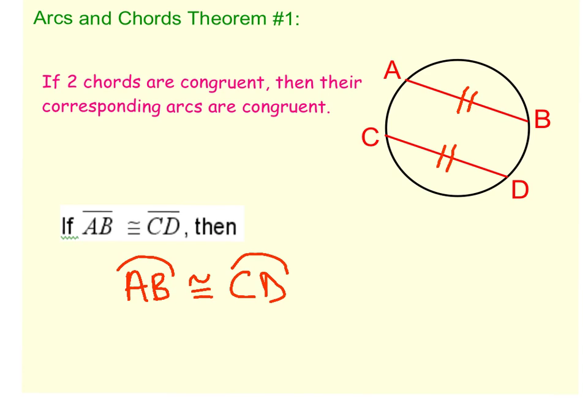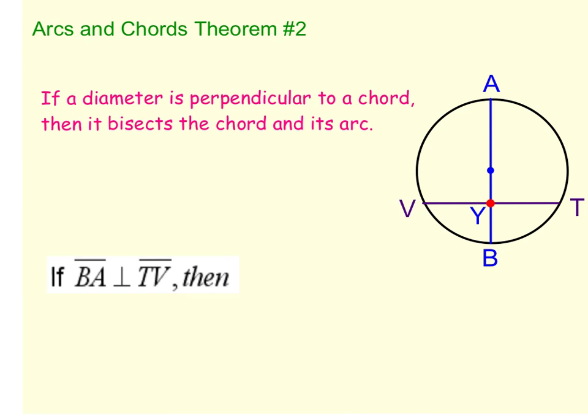Not only are the two chords congruent, but their arcs must be. This theorem works both ways. So if I told you that the arcs were congruent, you would be able to tell me that the chords are congruent. For this first theorem, make sure you copy the picture, copy the theorem, and then fill in that if the chords AB and CD are congruent, then their arcs are congruent.